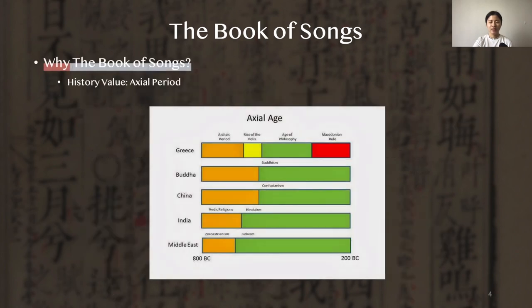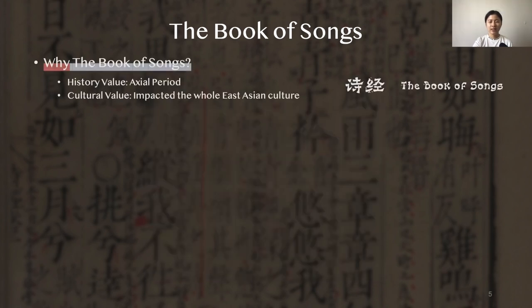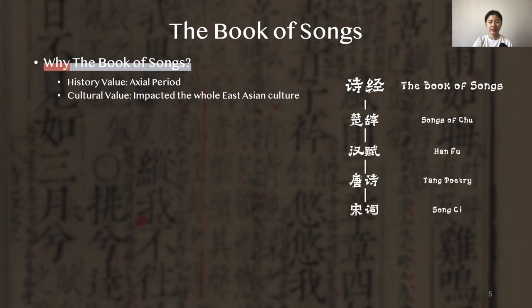This epoch is paralleled with the Axial Age of world history, and Confucius is regarded as one of the fundamental East Asian philosophies. It is widely acknowledged as the origin of traditional Chinese culture, and highly impacted the whole of East Asia.